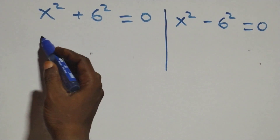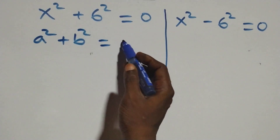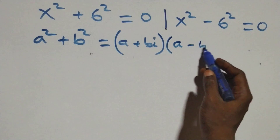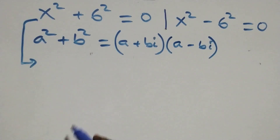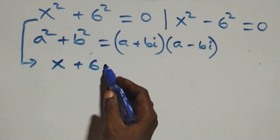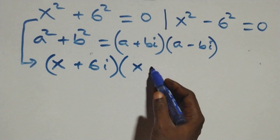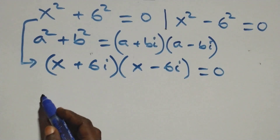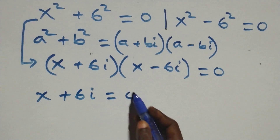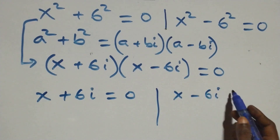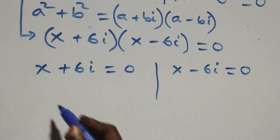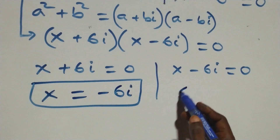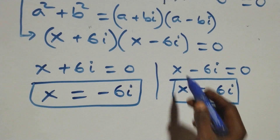Solving the first case, this follows a² + b² = (a + bi)(a − bi). So it becomes (x + 6i)(x − 6i) = 0. This gives two cases: x + 6i = 0 or x − 6i = 0, so x = −6i, which is a complex solution, and x = 6i, which is also a complex solution.